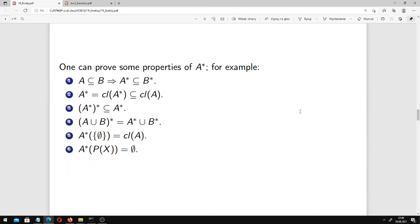One can prove some properties of A star. For example, if A is contained in B, then the same inclusion holds between their local functions. A star is closed in the sense of topology T. A star is just like closure of A star. A star star is contained in A star. Local function of the union of two sets is union of their local functions, A star plus B star.